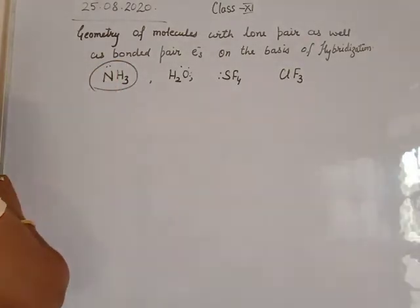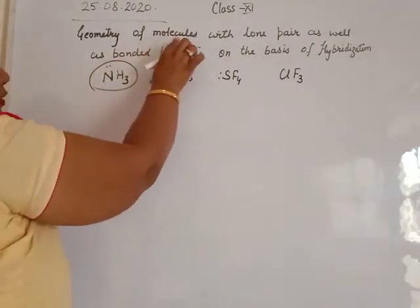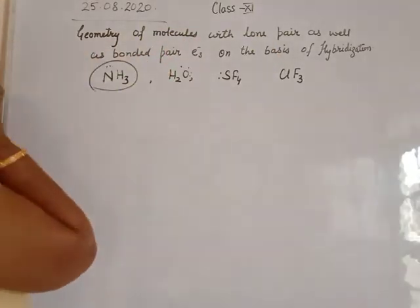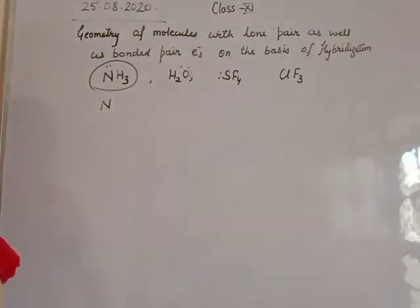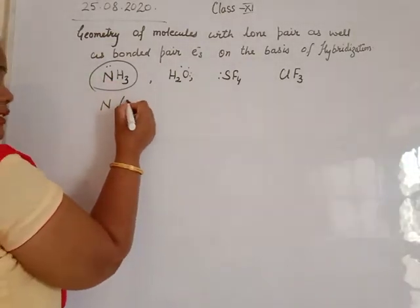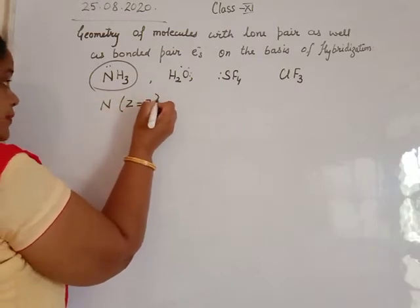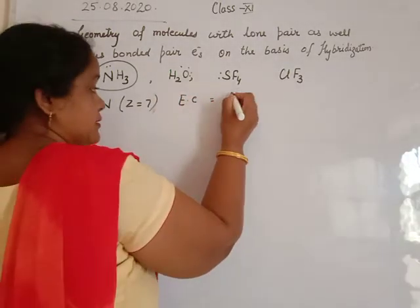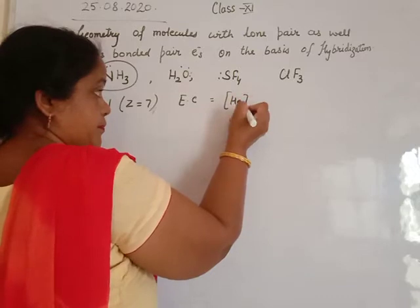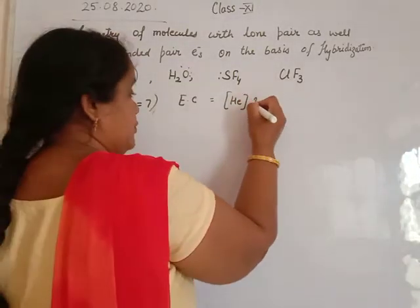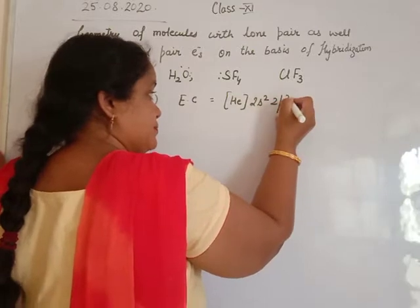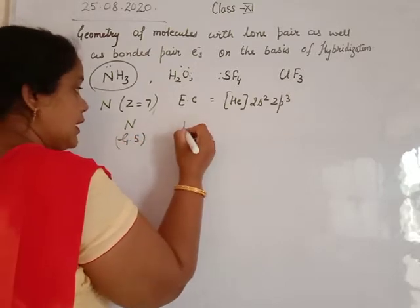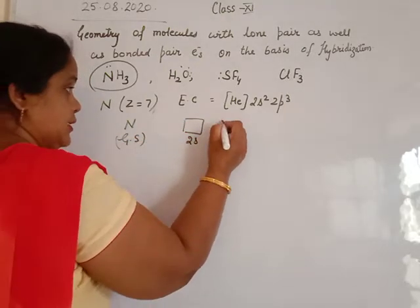First of all, we use ammonia to determine the geometry of molecules having lone pairs as well as bonded electrons. The central atom of ammonia is N. The atomic number of nitrogen is 7. The electronic configuration of nitrogen is: helium core, 1s2, 2s2, 2p3. In the ground state, only the outermost shell is used — 2s and 2p.